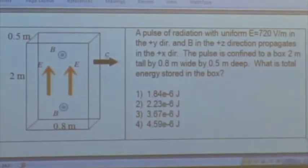The height of the box is 2 meters, the width is 0.8 meters, and the depth is 0.5 meters. Everywhere in there we have a uniform electric field pointing upward of 720 volts per meter and some magnetic field, which you may or may not need to know. So we have the dimensions of the box. How much energy is stored? What's the total energy stored in the electromagnetic fields inside that box? See if you can work that out.